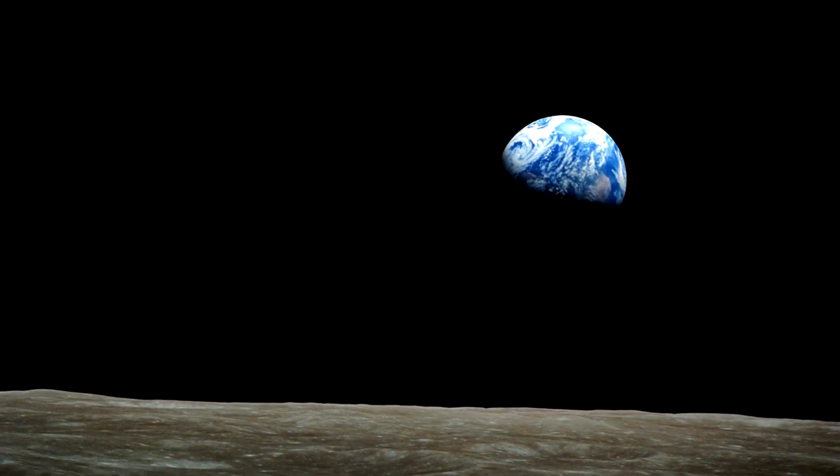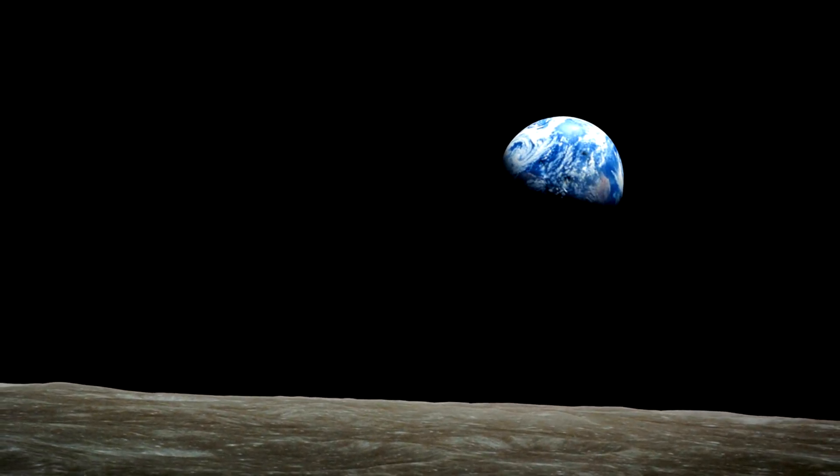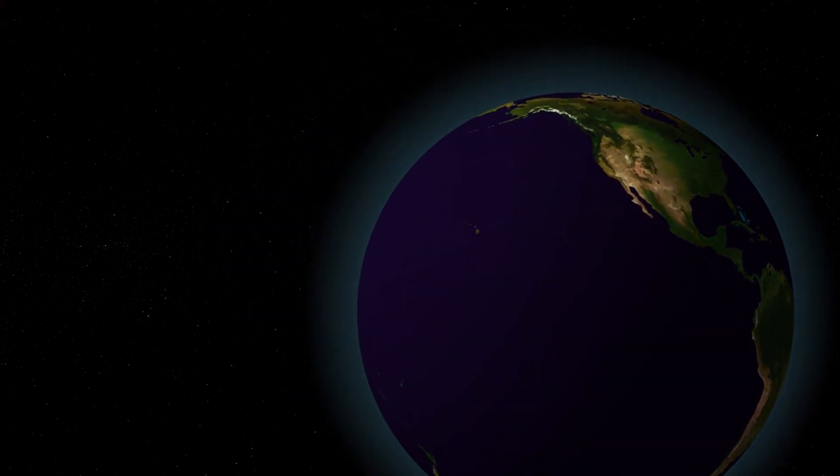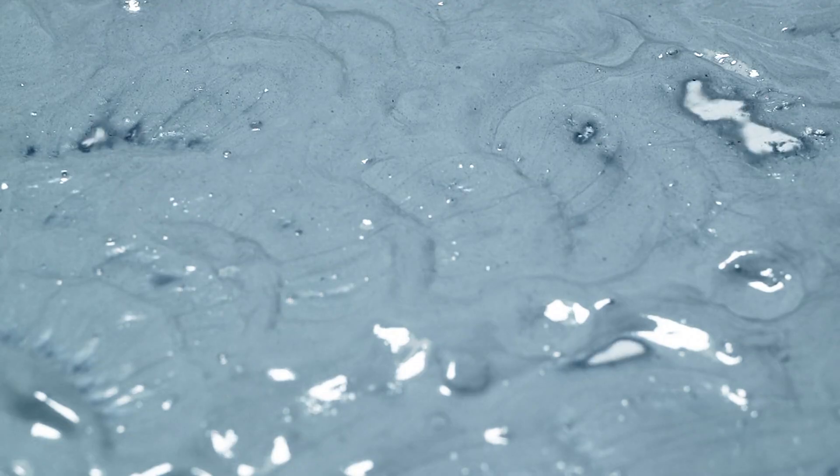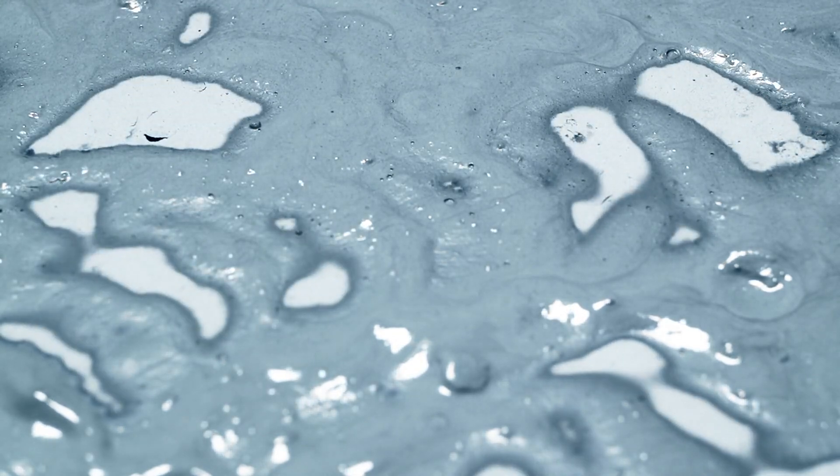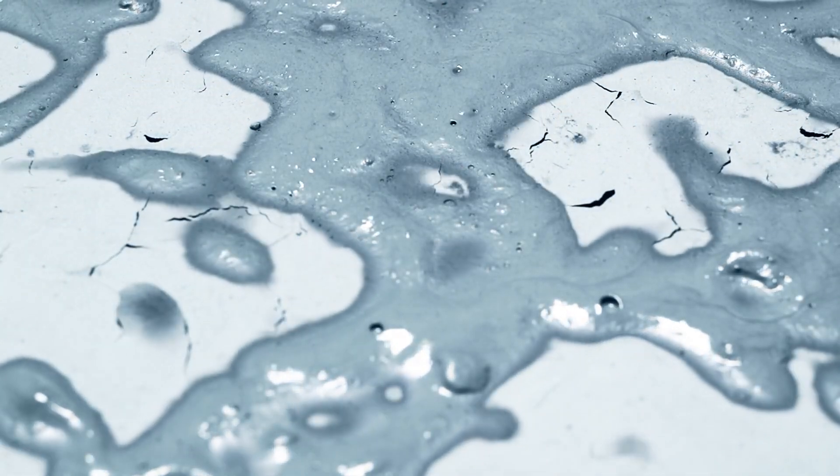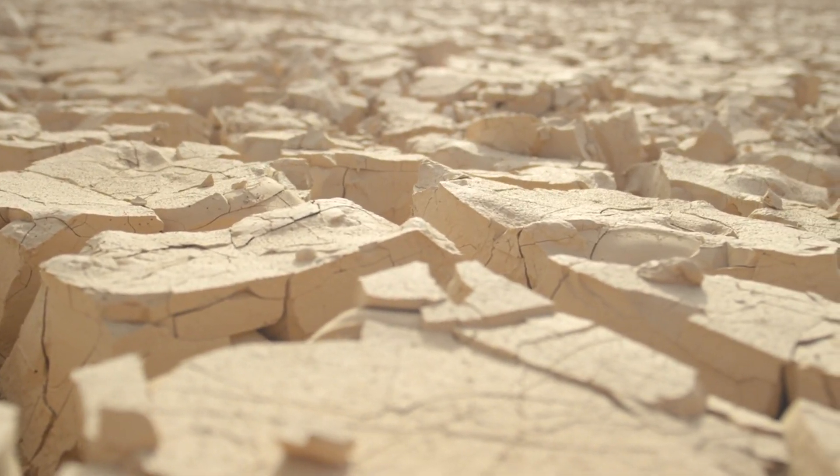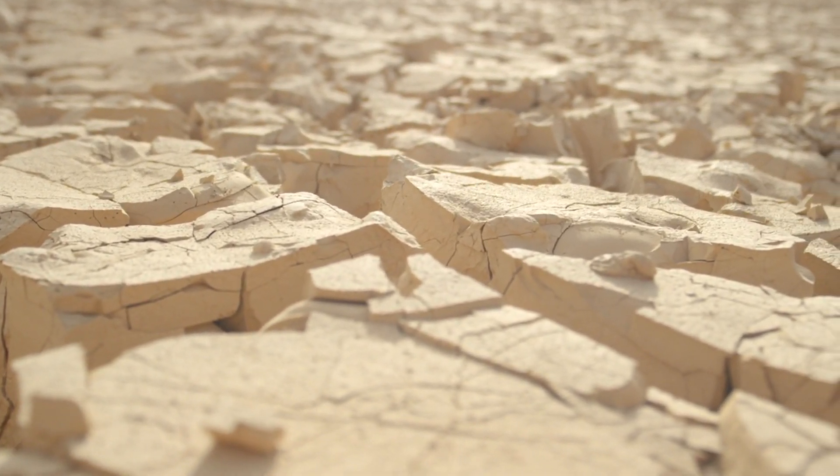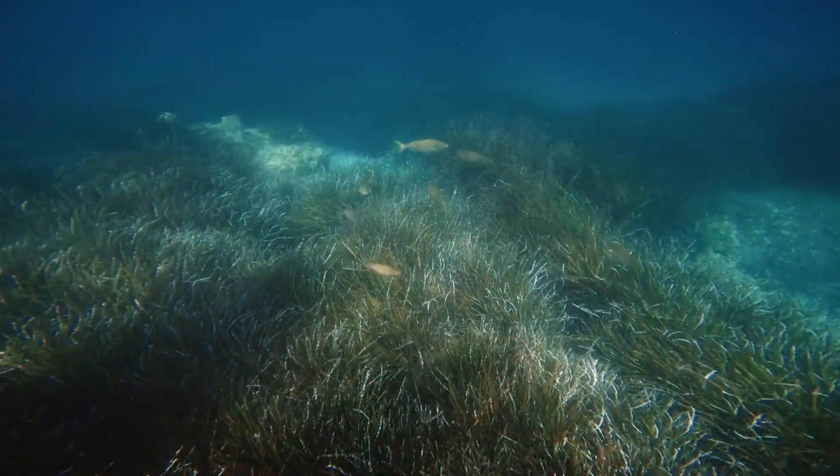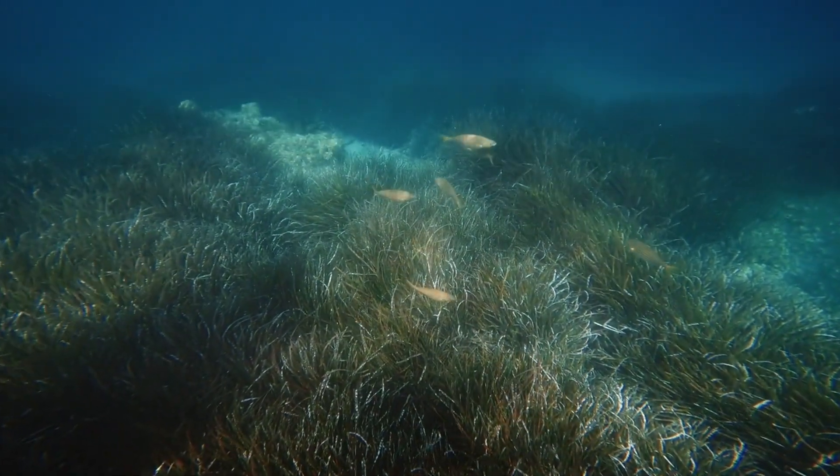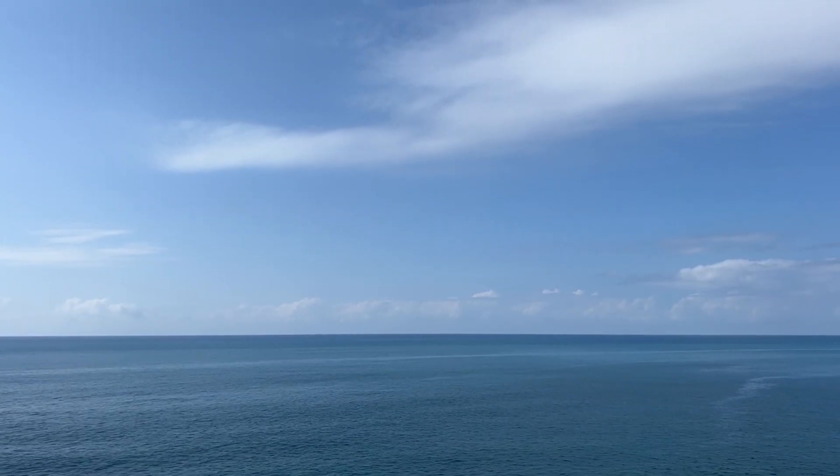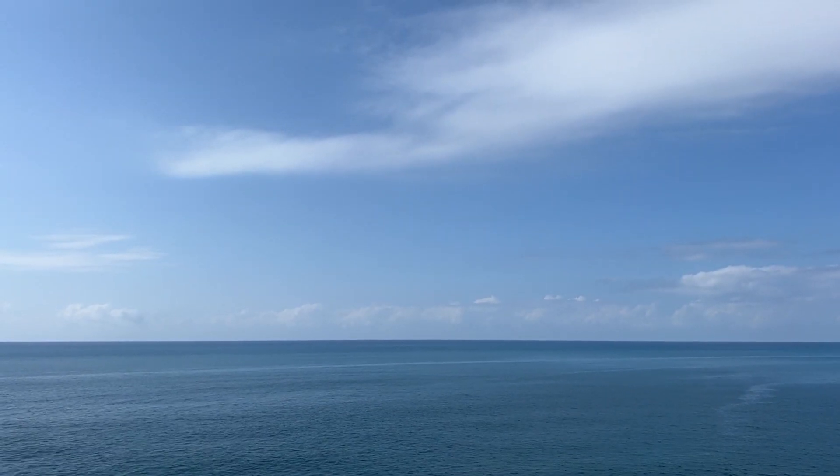A billion years forward, Earth's environment will be radically altered. The sun's growing luminosity will cause a greenhouse effect, making surface temperatures soar. Oceans, once Earth's defining feature, may begin to evaporate, turning vast regions into arid deserts. With such extreme heat, complex life on the surface could become scarce. However, microbial life might persist in niches like underground reservoirs or shaded canyons. Earth's appearance from space would shift, with a hazy atmosphere and fewer blue oceans.